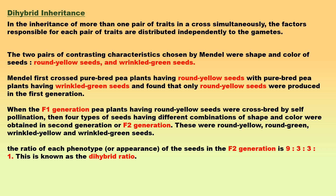Mendel collected a total of 556 F2 seeds and counted them shape-wise and color-wise. The ratio of each phenotype in the F2 generation is 9:3:3:1. This is known as the dihybrid ratio. Mendel observed that he had started with two combinations — round yellow and wrinkled green — and two new combinations had appeared in the F2 generation: round green and wrinkled yellow. Mendel concluded that though the two pairs of original characteristics, seed shape and color, combine in the F1 generation, they separate and behave independently in subsequent generations.